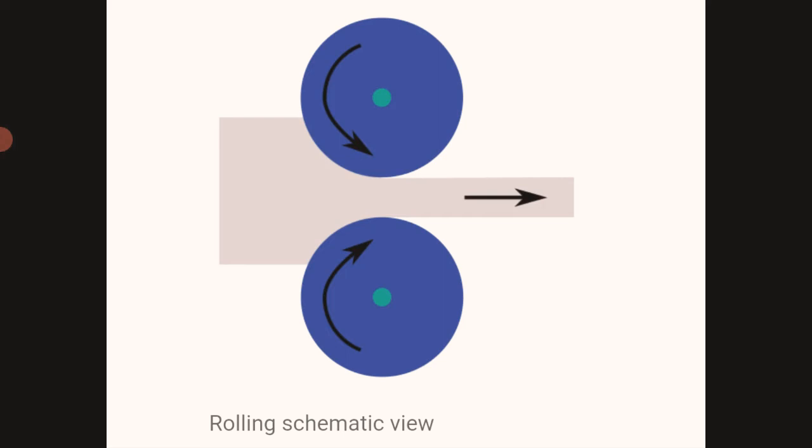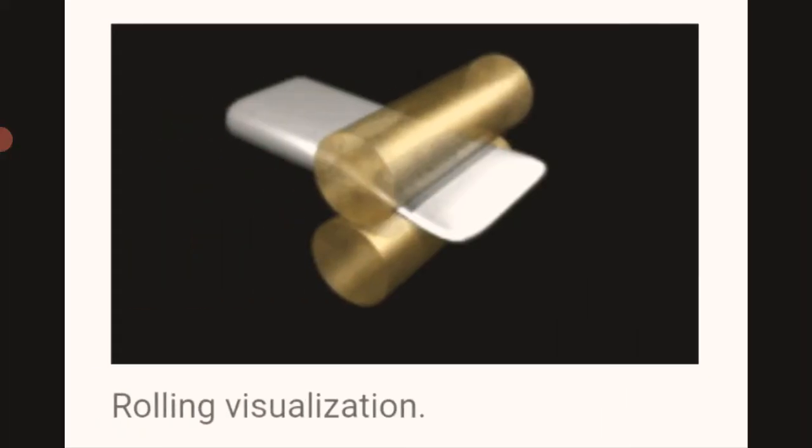On the left-hand side you can see the thickness between the rollers is reduced. If you have a previous or initial thickness and you reduce the distance between the rollers, you compress the workpiece. You can see in this rolling visualization that the workpiece enters with more thickness and exits with reduced thickness in the middle of the rollers.